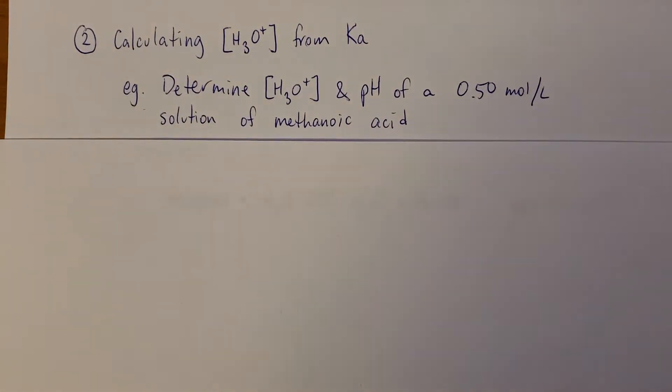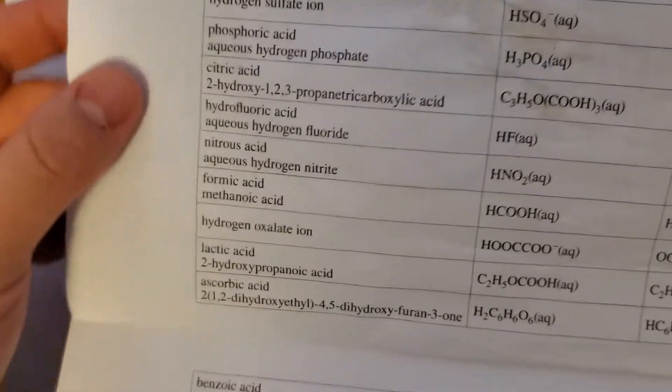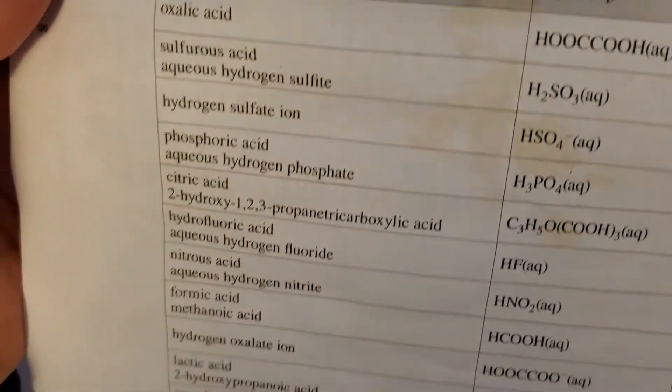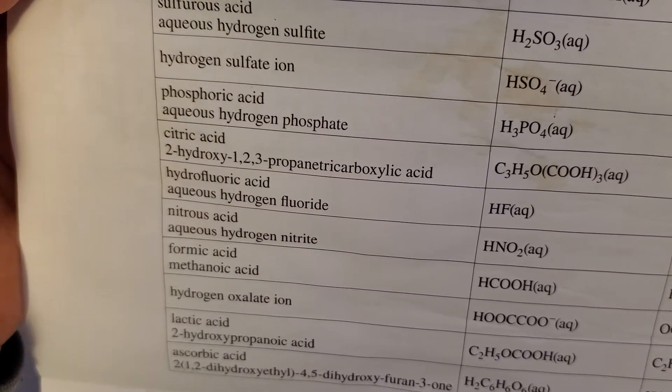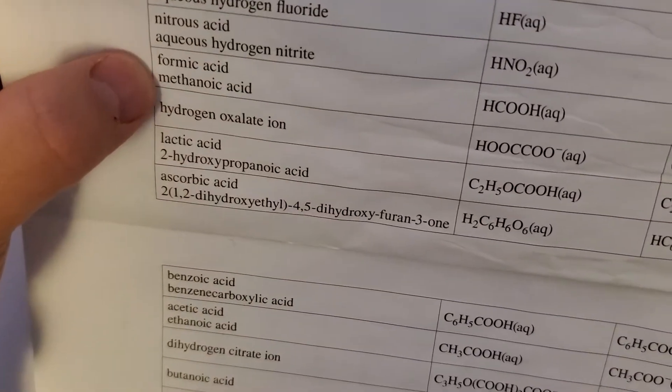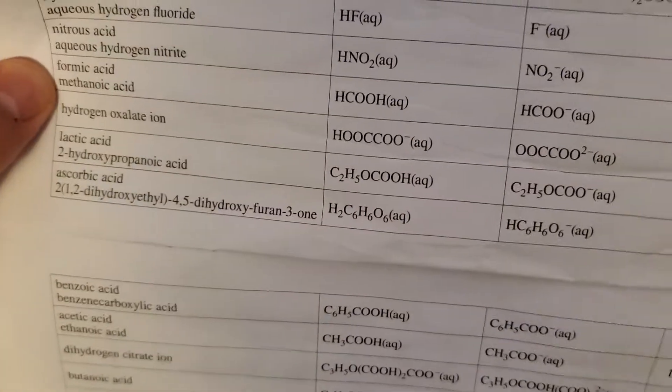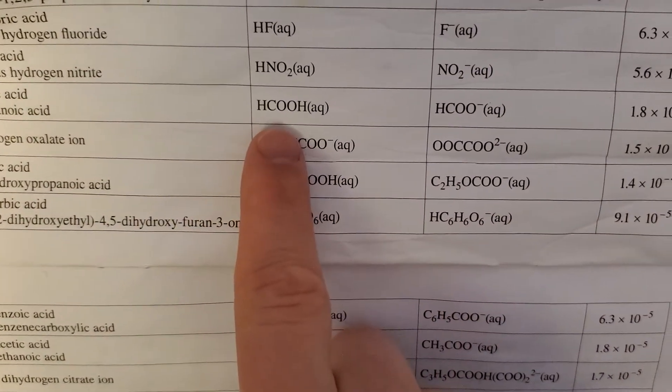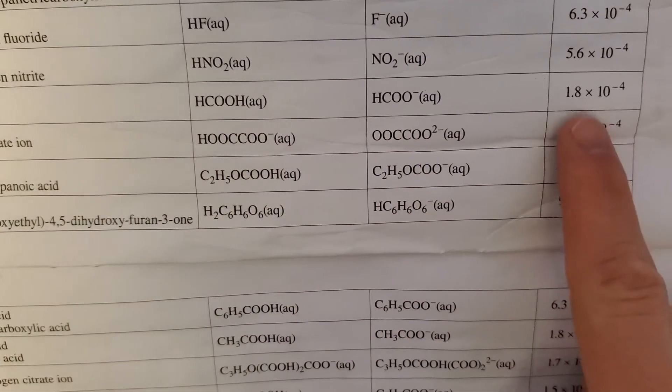Maybe you don't walk around knowing what methanoic acid is, but you do have a data booklet. Go to the acid chart. I'm looking for it. It goes by two names. So formic acid slash methanoic acid. That's its formula. That's its Ka value.